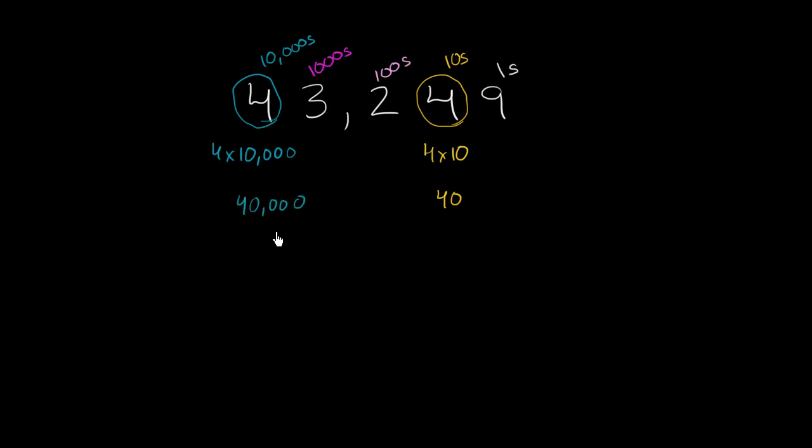So let's actually compare the value that we're getting here versus here. What's the difference between 40,000 and 40? Well, 40,000 has four 0's, while 40 only has one. So if you wanted to go from 40 to 40,000, you would have to add three more 0's.